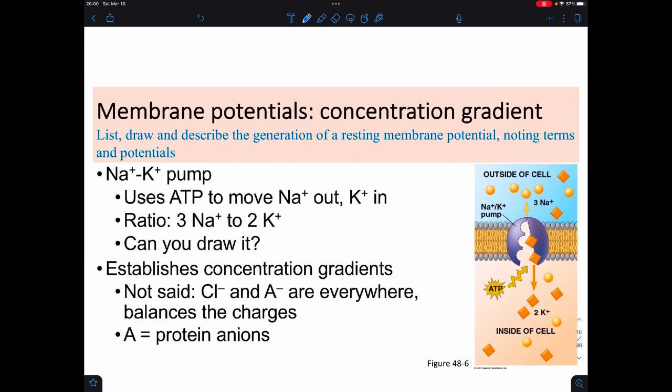In order to get these concentration gradients, we actually use an old friend from Bio 174, which is the sodium potassium pump. And the job of the sodium potassium pump is it utilizes ATP to push sodium out and move potassium in. The ratio does turn out to be 3 to 2, but that ratio isn't super important. I would hope that you could draw this mainly from memory, but just in case you can't.